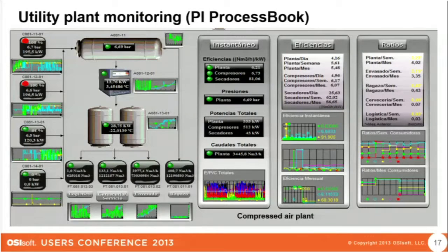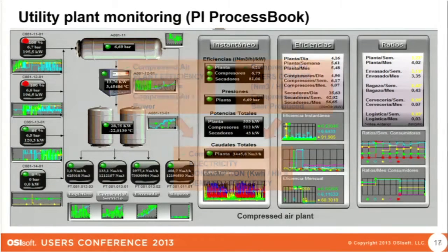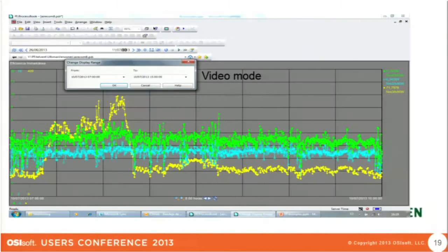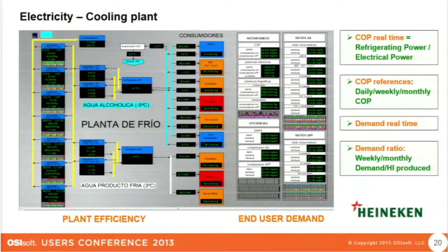We also check the efficiency value for our last 24 hours, our last week, and our last month. We control consumption by controlling plant efficiency and end users demand. By video mode we can check our historical values and identify the losses. We can check plant efficiency, users demand, and COP.